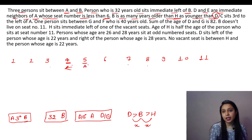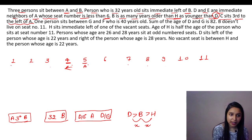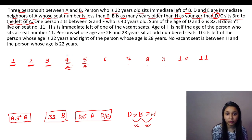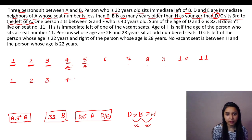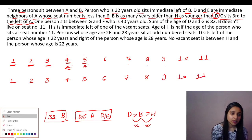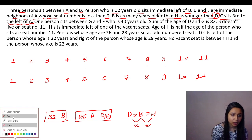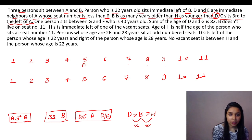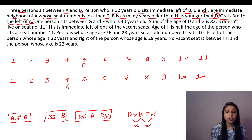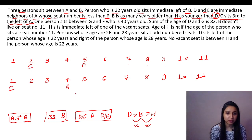'C sits third to the left of A.' Now combining with A's seat being less than 6: A cannot be on seats 1, 2, or 3 (since C must fit to the left). So A can only be on seat 4 or seat 5. This gives us two cases: Case 1 — A on seat 4, C on seat 1; Case 2 — A on seat 5, C on seat 2.